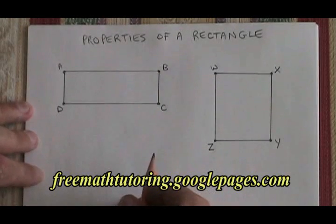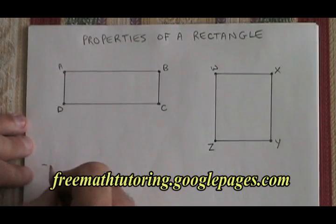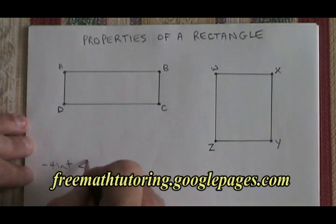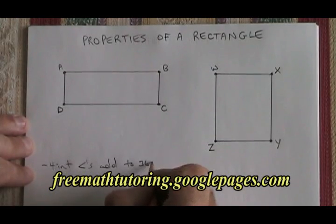The properties of a rectangle are, first of all, a rectangle is a quadrilateral, therefore its four interior angles add up to 360 degrees.